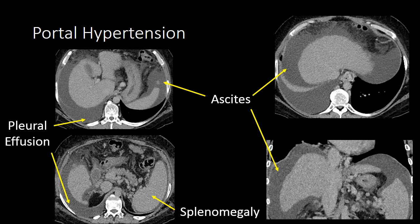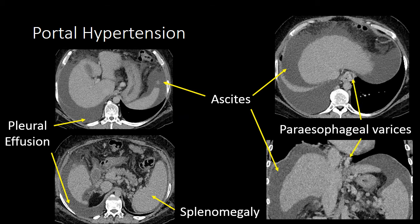The most life-threatening manifestation of portal hypertension are paraesophageal or paragastric varices. As the portal hypertension worsens and pressure within the varices increases, these varices can rupture into the esophagus or stomach, resulting in massive gastrointestinal bleeding.